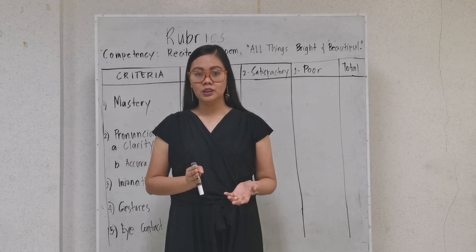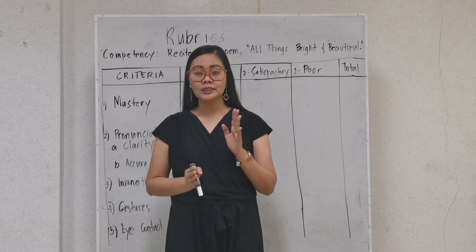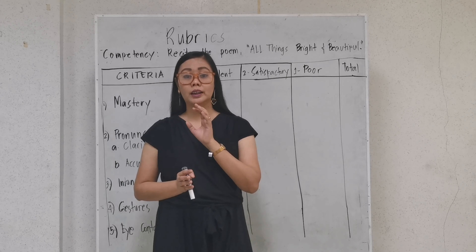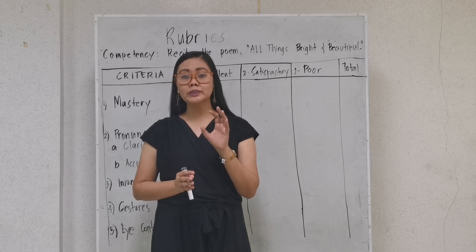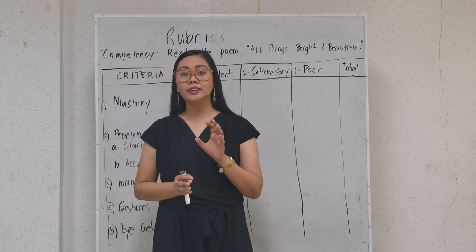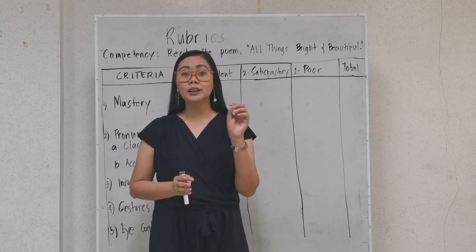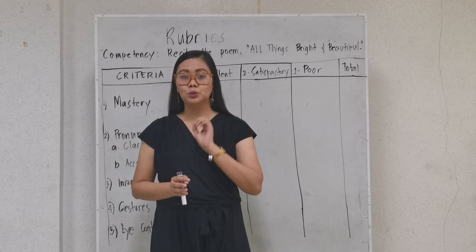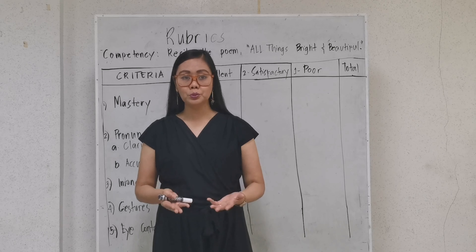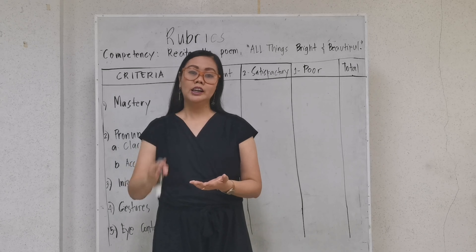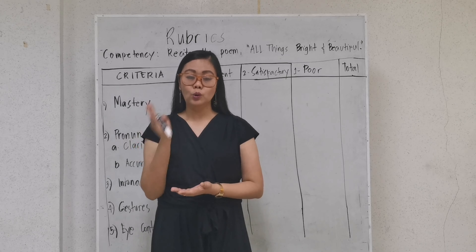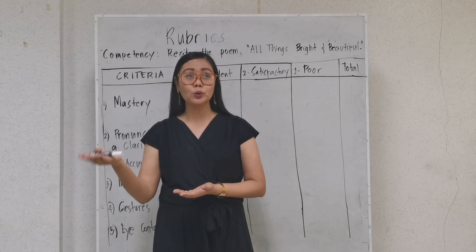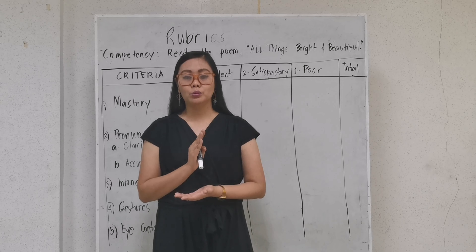In our first video, the task we discussed was designed around the poem 'All Things Bright and Beautiful.' The general objective we placed there was: the student should be able to recite the poem 'All Things Bright and Beautiful.' We are now going to construct a rubric in relation to that task. We have already identified the skills during the previous video, so we are going to connect those skills to our rubric.